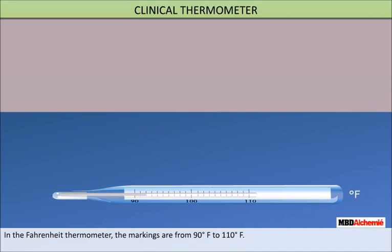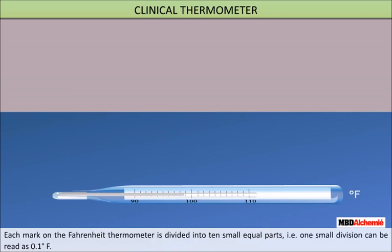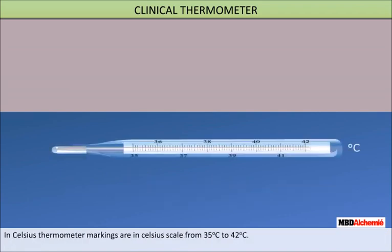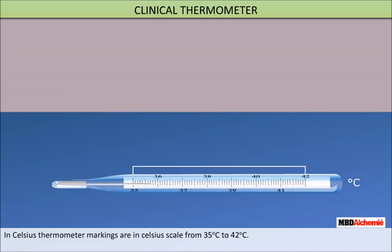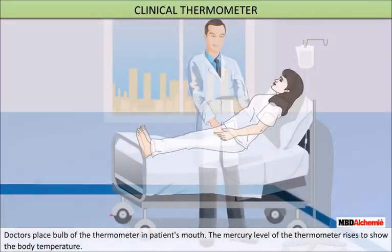In the Fahrenheit thermometer, the markings are from 90°F to 110°F. The normal temperature of the human body is 98.6°F. Each mark on the Fahrenheit thermometer is divided into 10 small equal parts, so one small division can be read as 0.1°F. In the Celsius thermometer, markings are from 35°C to 42°C.